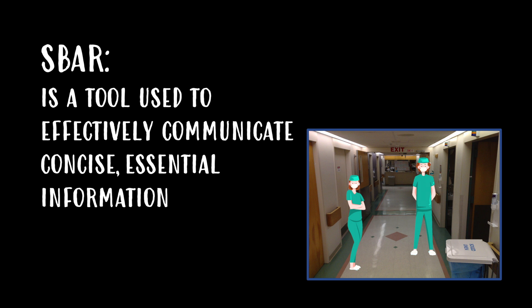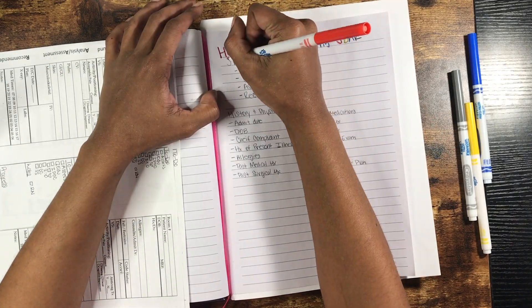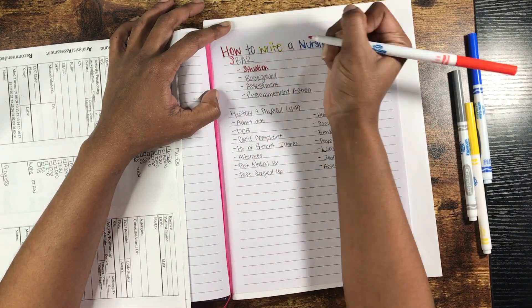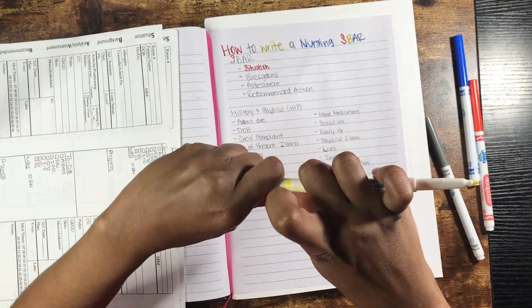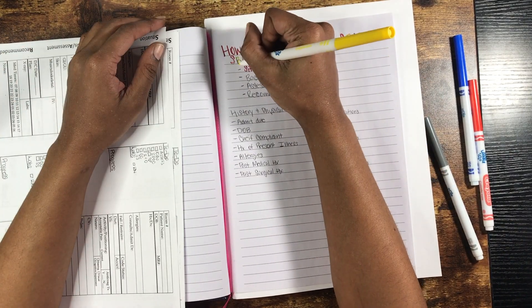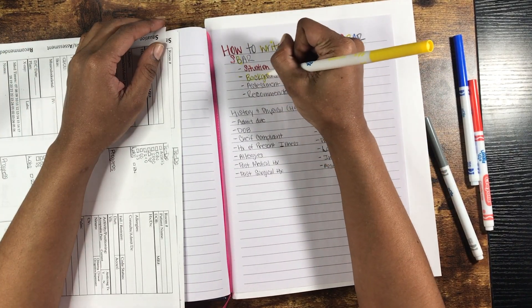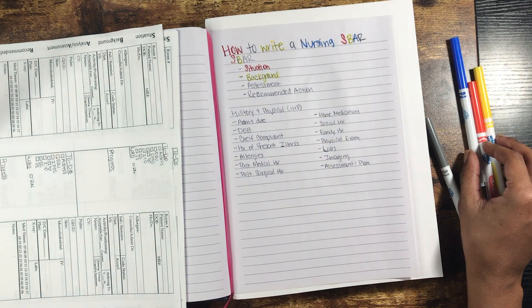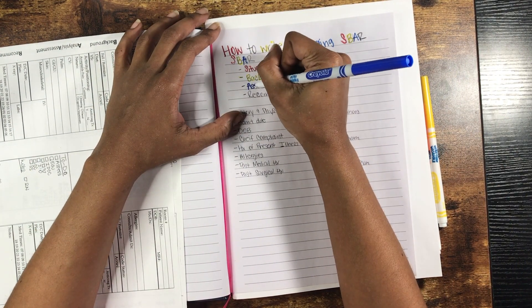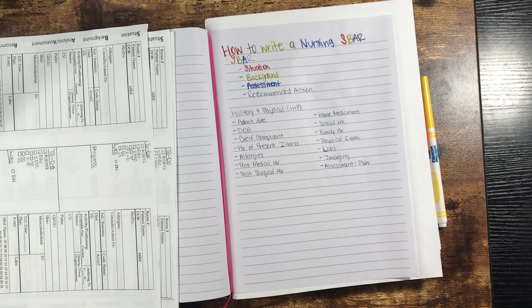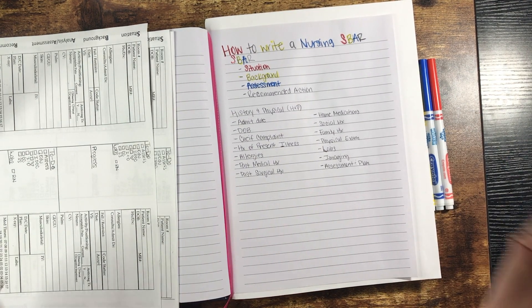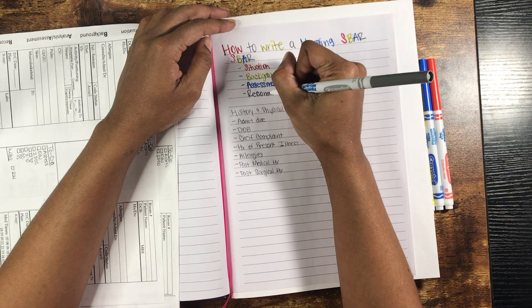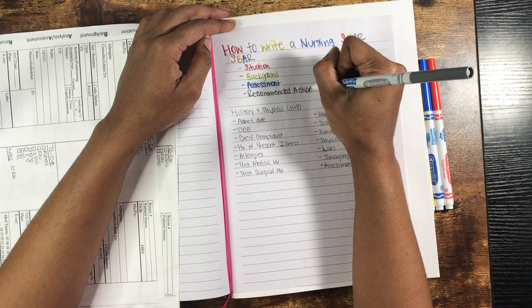SBAR is a tool used to effectively communicate concise essential information. The word SBAR is an acronym. S stands for situation or why the patient is here. B for background or previous relevant medical history. A is for assessment like patient vitals and overall look head to toe. And R is for recommended action or next steps in patient care.